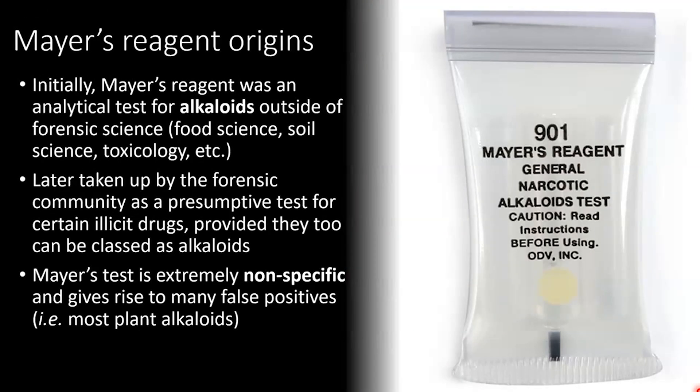Use of Mayer's Reagent didn't start with the forensic sciences. Instead, it was used as an analytical test for alkaloids in areas such as food science, soil science, toxicology, and other areas such as medicine. Later it was taken up by the forensic community as a presumptive test for certain illicit drugs, provided that they too could be classed as alkaloids. Mayer's test is extremely non-specific and gives rise to many false positives, including most of the plant alkaloids.